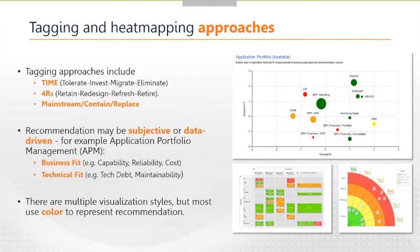In the application portfolio management space, it's very common to use measures such as business fit and technical fit to determine the rating for each application. Business fit would be the extent to which the application provides the business capability, is reliable and available, or is cost effective. Technical fit might be the extent to which it's maintainable or complies with technical strategy. On the right-hand side we have a very simple bubble chart showing those key business versus technical fit dimensions for a small application portfolio — that's enough to start categorising those applications into one of those tags or categories.